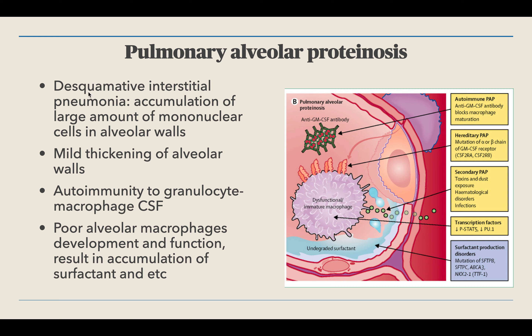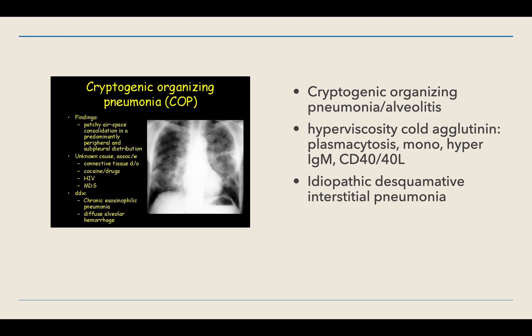Pulmonary alveolar proteinosis involves desquamative interstitial pneumonia, where the interstitium breaks down and there is accumulation of large numbers of mononuclear cells in the alveolar walls, causing mild thickening. This can be due to autoimmunity against granulocyte-macrophage CSF, or poor alveolar macrophage development and function, resulting in accumulation of surfactant. Going back to cryptogenic organizing pneumonia, there is a hyperviscosity syndrome called a cryoglobulin, which is idiopathic and appears as diffuse alveolar hemorrhage.